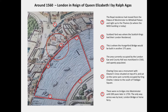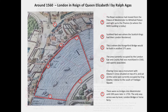We go past Scotland Yard, which was where the Scottish kings had their London residence. This is a royal residence in Whitehall, and at the top left-hand corner we can see Eleanor's Cross at Charing Cross, which is now the site of King Charles I's statue. On the south side it would have all been marshland.